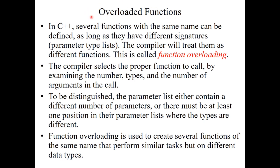Function overloading is mainly used to create many functions of the same name which perform similar tasks. For example, all functions might compute a volume, but one computes the volume of a cube and another computes the volume of a sphere. One has one parameter (radius) and another has three parameters (length, breadth, height) — similar tasks but for different objects and different data types.